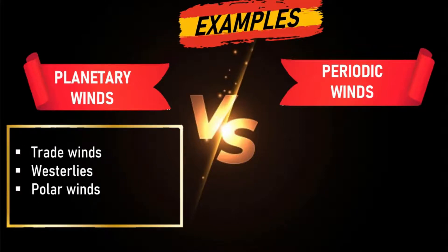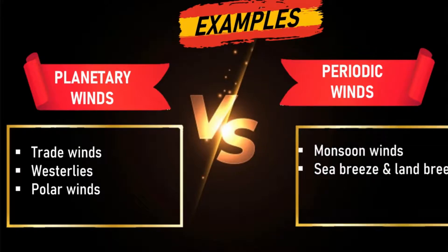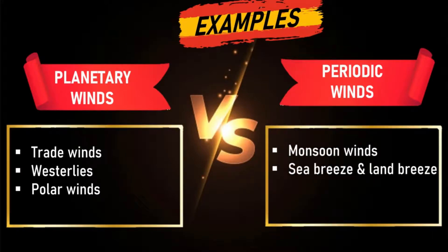Examples of planetary winds are trade winds, westerlies, and polar winds. Examples of periodic winds are monsoon winds, sea breeze, and land breeze.